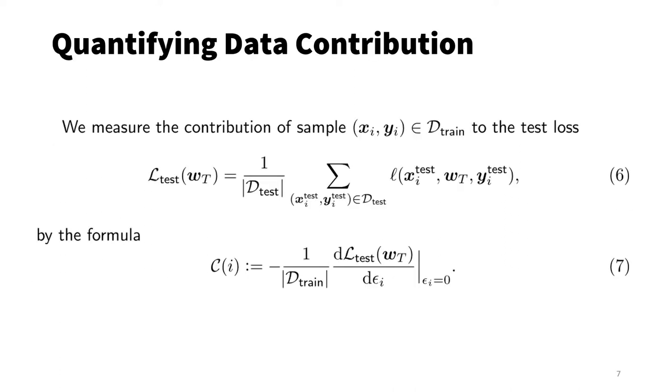We have a labeled test set, D_test. We can compute its test loss as the sum of losses over individual test data points. To understand how training data contribute to the test predictions, we can simply look at how test loss changes when we change the data weight epsilon. This is computed as the negative of the derivative of the test loss with respect to epsilon. When increasing the data weight epsilon decreases the test loss, we say that the training data contribute positively to the test prediction and vice versa. If we set epsilon to minus 1 over D_train, this effectively removes the training data point from the training loss. Using a first-order Taylor expansion, the change in test loss is simply C_i in equation 7. That's why we use C_i as the contribution of the i-th training data point.